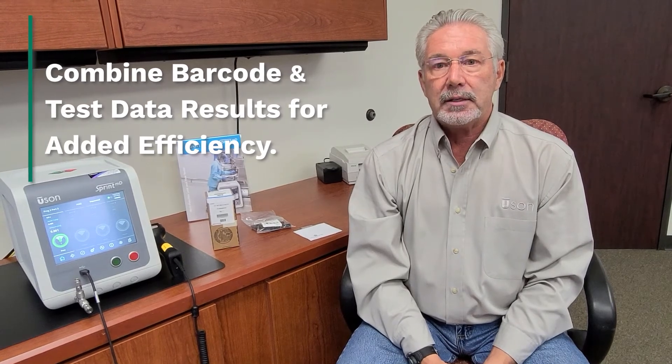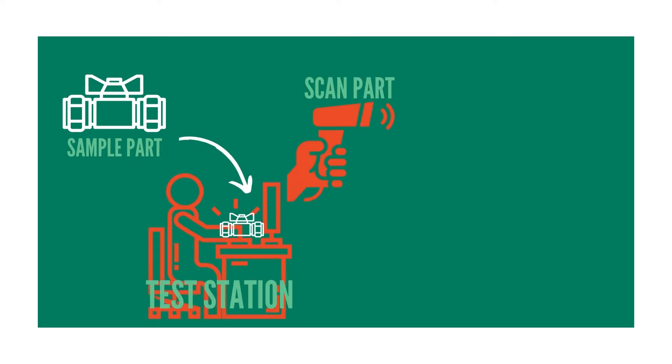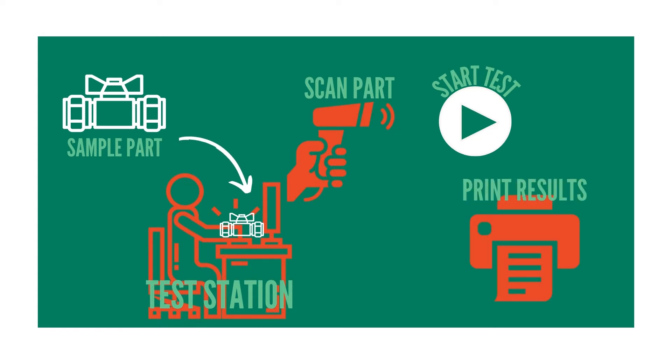A customer recently came to us needing to utilize barcodes for random sample testing of parts. In their ideal workflow, the operator would load the sample part on the test station, then the corresponding lot number is scanned, which automatically starts a leak test. They also want to output test results to a printer showing the date, the batch number, the ID of the test station, and the individual test results of each sample. When all the samples in the lot are tested, they want to take the test result printout and place it with the lot.